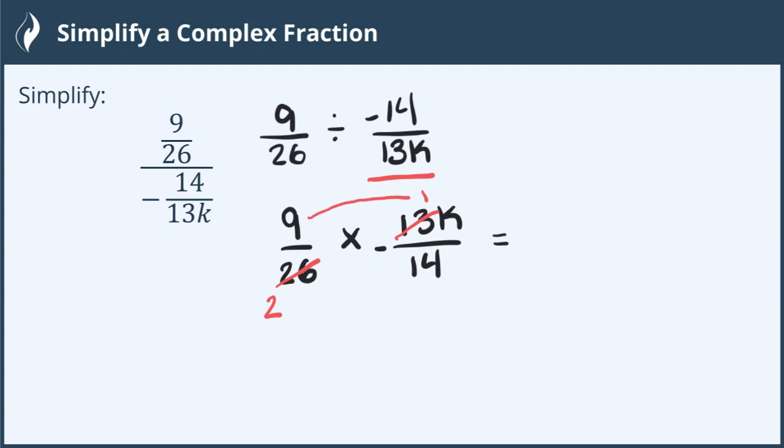That leaves me 9 times 1 which gives me 9, and don't forget the k, and I have that negative out front. Then I'm going to multiply the denominators.